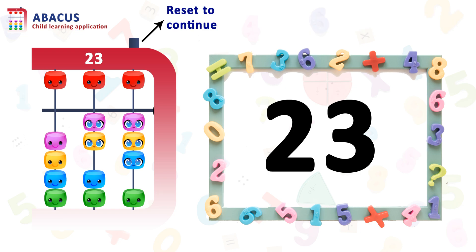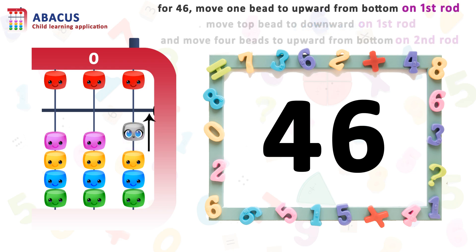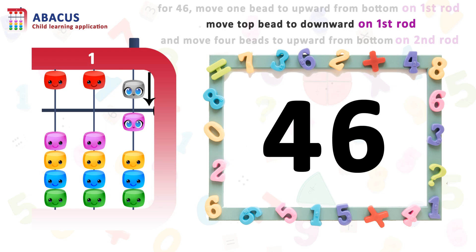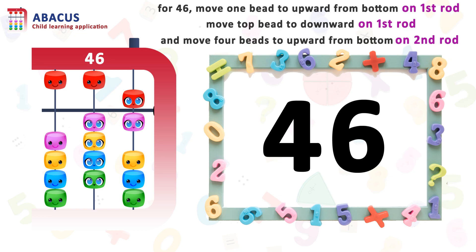Let's reset and go to the next number. Here we have the number 46. So let's set 46. For 46, we have to set 6 on the first rod and set 40 on the second rod. Move 1 bit upward from the bottom below the beam on rod 1, then move the top bit downward above the beam on rod 1, and now move 4 bits upward from the bottom on the second rod. And here we are done.